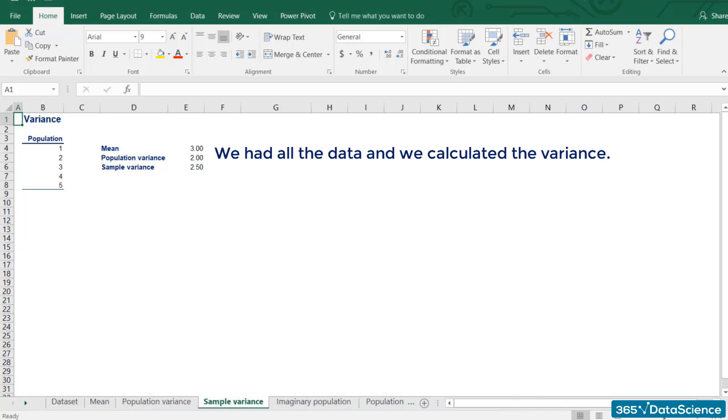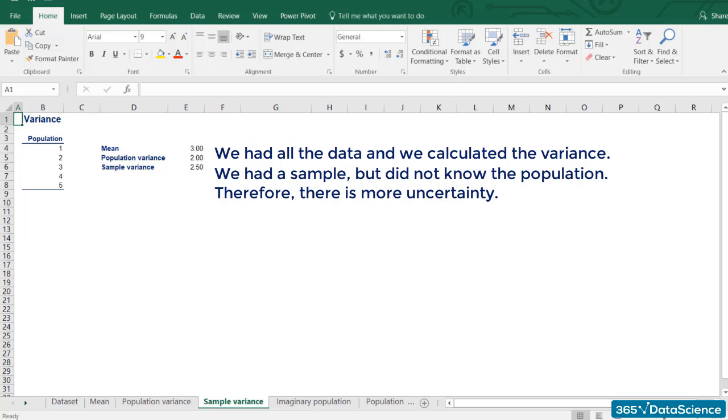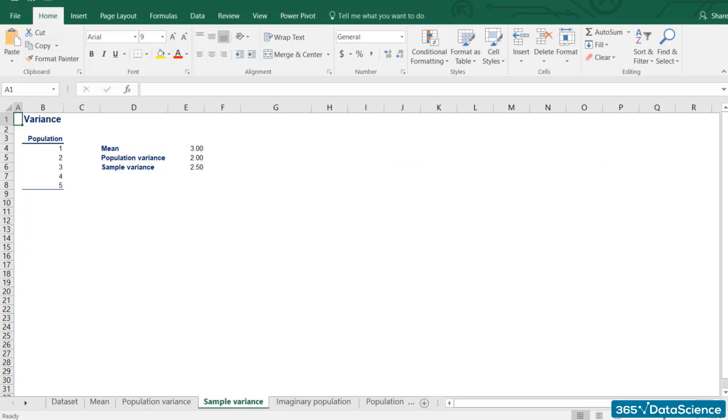In the second case, we were told that 1, 2, 3, 4, and 5 was a sample drawn from a bigger population. Imagine the population of this sample were these 9 numbers: 1, 1, 1, 2, 3, 4, 5, 5, 5, and 5.